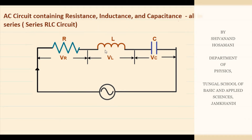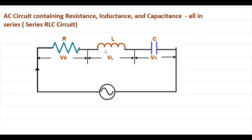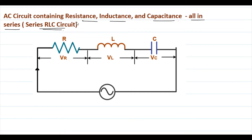Welcome back. In the last class we discussed the operator j, the Argand diagram, and how it is mathematically represented and used. Now let me apply that operator j in the next topic: the series RLC circuit — an AC circuit containing a resistance, inductance, and capacitance all connected in series.